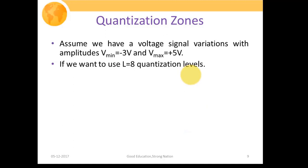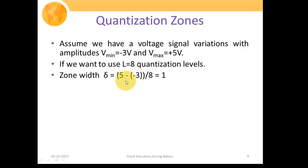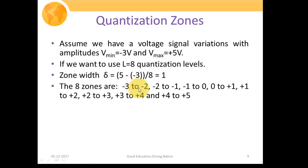For example, suppose the maximum value of the signal is plus five volt and the minimum value is minus three volt, and we want to use eight quantization levels. Then the step size delta = (5 − (−3)) / 8 = 8/8 = 1 volt. So the eight zones will lie between minus 3 to minus 2, minus 2 to minus 1, minus 1 to zero, and so on, with the last zone from plus four to plus five volt.